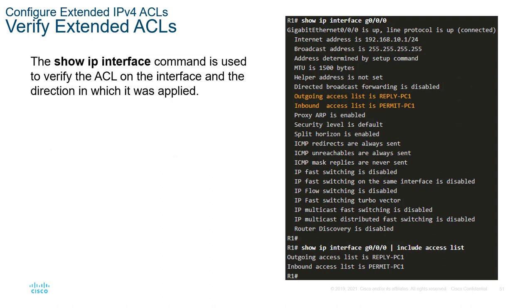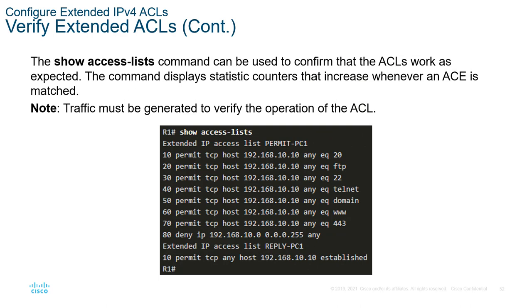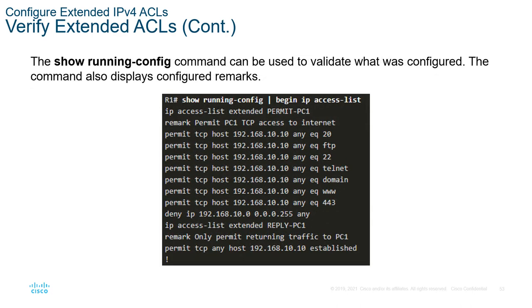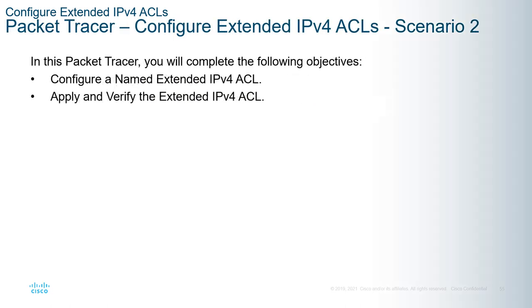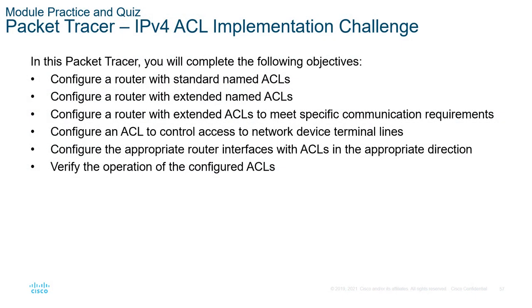To verify extended ACLs, we use three different show commands. 'Show ip interface' shows incoming and outgoing interfaces and ACLs applied. 'Show access-list' shows access lists with their sequence numbers. 'Show run' piped with 'begin ip access-list' also provides our access lists. We have labs covering how to configure this, and that is it for this module. We actually have several labs covering how to configure ACLs, including a challenge lab and a physical mode lab.